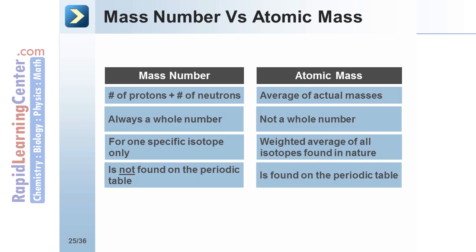The mass number is not found on the periodic table. The periodic table lists the atomic mass, the average for all the isotopes.